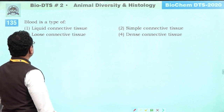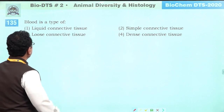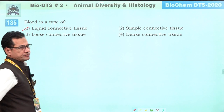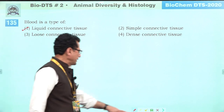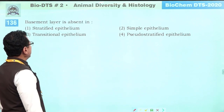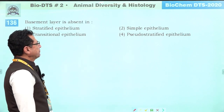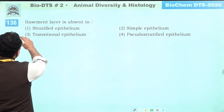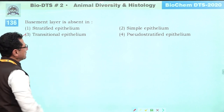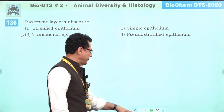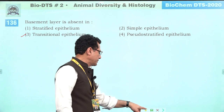Blood is a type of simple liquid connective tissue. Basement layer is absent in transitional epithelium. Otherwise it is found in all types of epithelium.